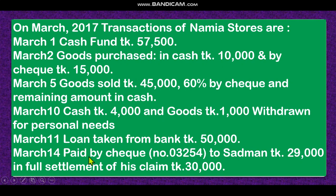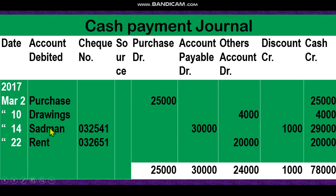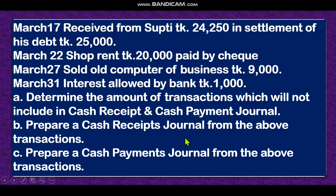On the 14th, paid by check to Sadman 29,000 in full settlement of his claim of 30,000. We are liable to pay Sadman 30,000 but paid only 29,000, so 1,000 is discount received — Sadman allowed us discount. Sadman account: we paid 29,000, cash decreased 29,000, discount received 1,000, and accounts payable decreases by 30,000.